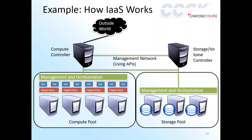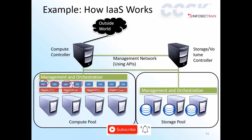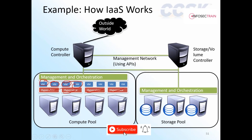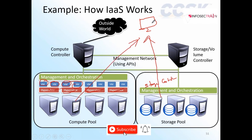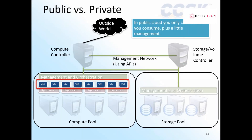Looking at the architecture diagram: the core of the compute is virtual machines running in a hypervisor, deployed across multiple physical servers. The compute controller handles management and orchestration — allocating VMs across resources and moving them between physical machines. Similarly, a storage pool has a storage controller that allocates storage. When a customer requests a VM, CPU and compute capacity come from the compute pool and storage from the storage pool.